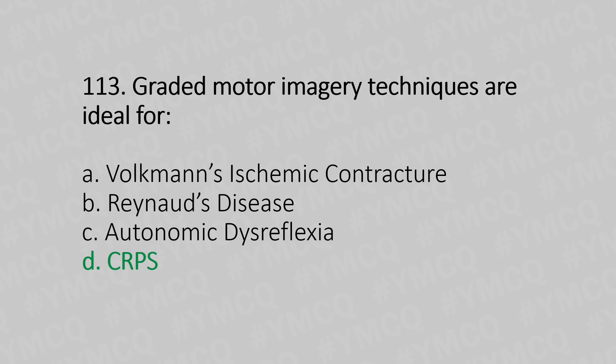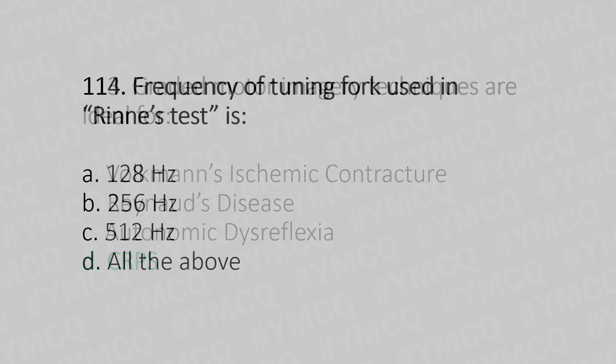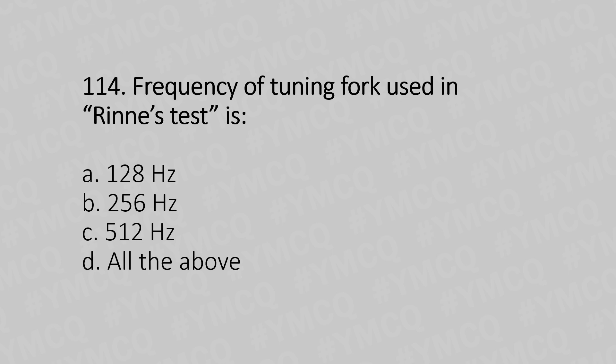Now let's move to question number 114. Frequency of the tuning fork used in Rinne test: Option A, 128 hertz. Option B, 256 hertz. Option C, 512 hertz. Option D, all of the above. And the answer is Option C, 512 hertz.